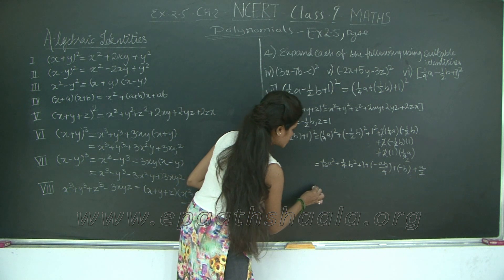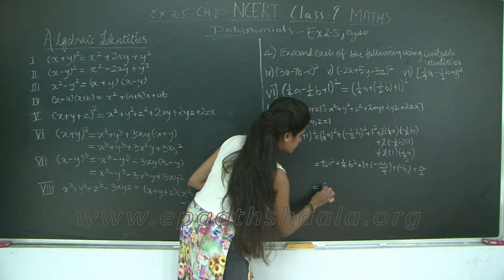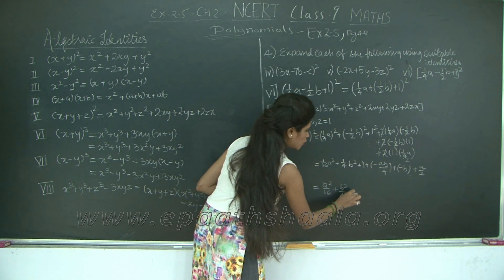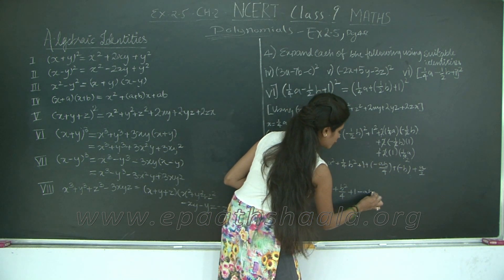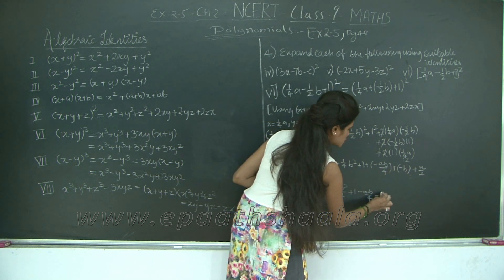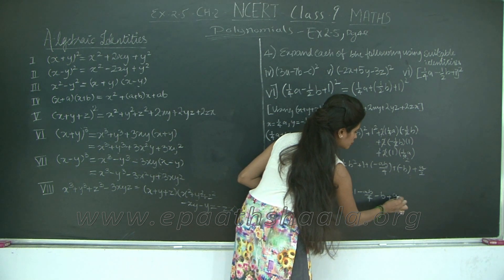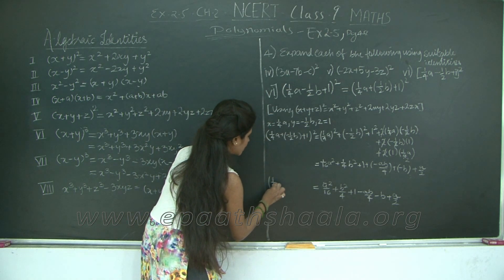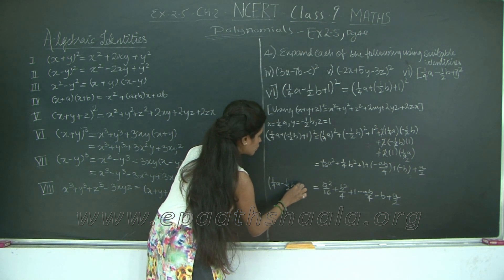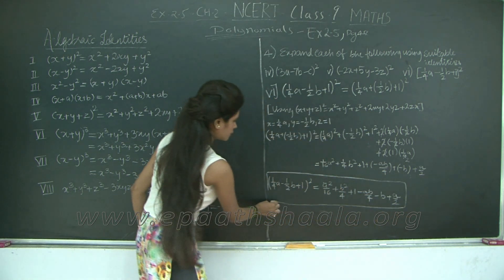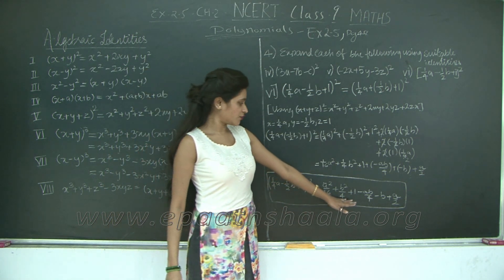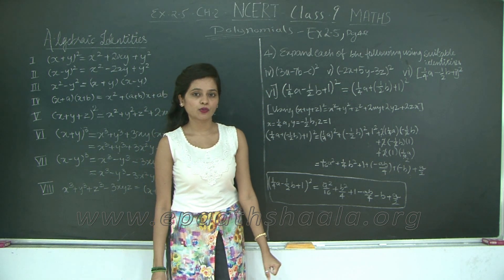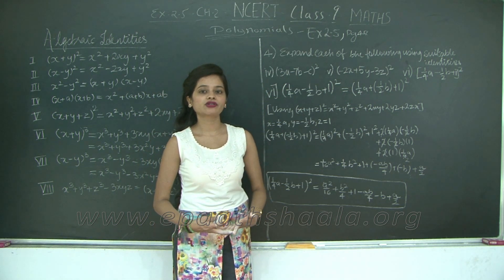Let's expand this further. This equals a²/16 + b²/4 + 1. Then plus × minus gives minus, so -ab/4; plus × minus gives minus, so -b; and finally +a/2. So, (1/4·a - 1/2·b + 1)² = a²/16 + b²/4 + 1 - ab/4 - b + a/2. We have completed question number 4 of exercise 2.5. Let's continue with the 5th question in the next class. Thank you.